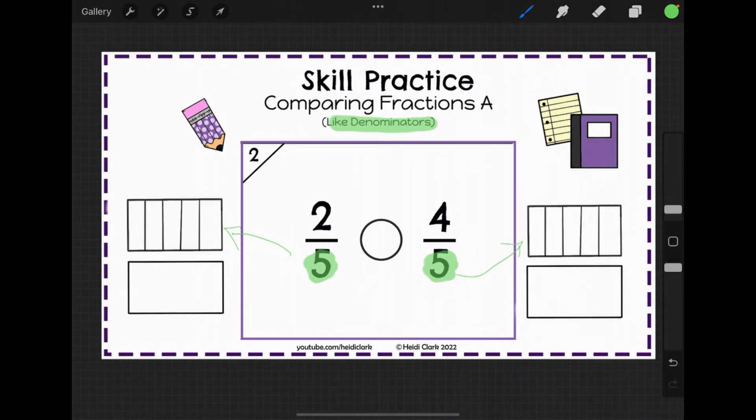So since the denominator is the same, we're going to look at the numerator. And the numerator is how many pieces you actually get. So would you rather have two pieces or four pieces, knowing that the cake got split into fifths either way?